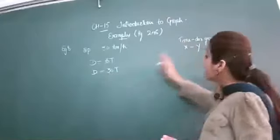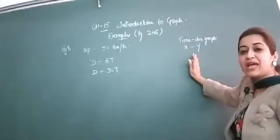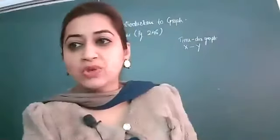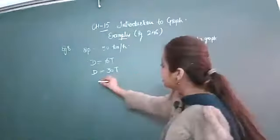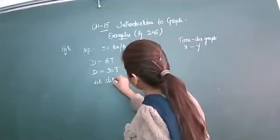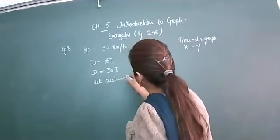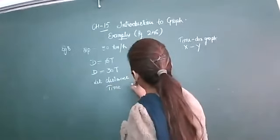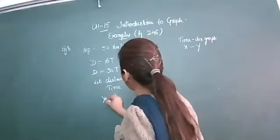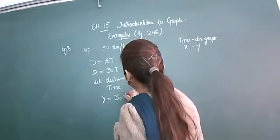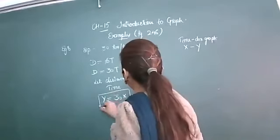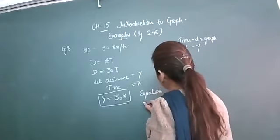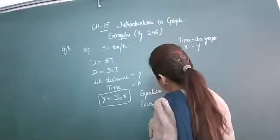Now, we have to draw the graph. For the graph you need to take x and y. So let distance as y and time as x. Your equation becomes y is equal to 30x.